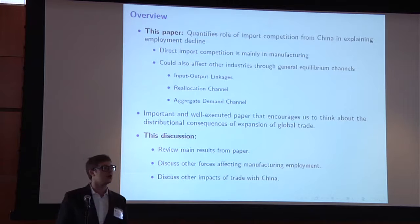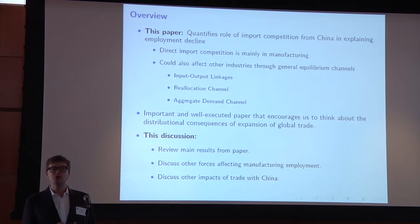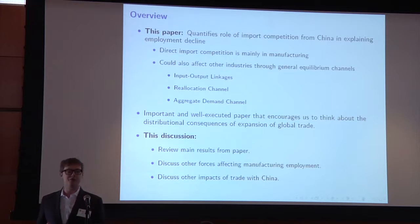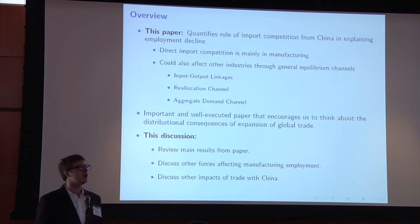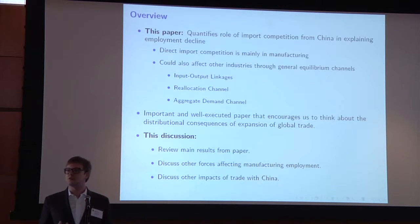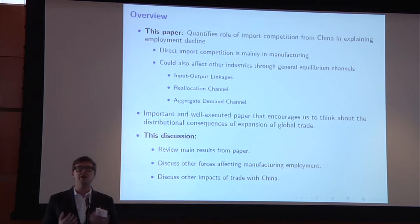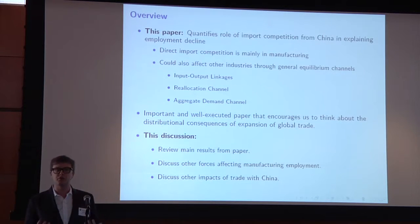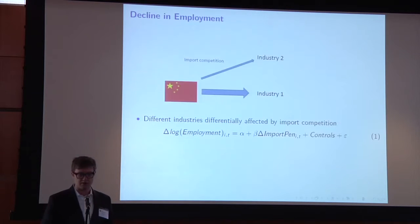The second thing I want to discuss is other impacts of this trade with China. Trade has large distributional consequences, one being this displacement of a large number of manufacturing jobs in the US. But what are the other important features of this trade with China that we need to think about in terms of a cost-benefit analysis, and in terms of the impact on income inequality and growth in the US?